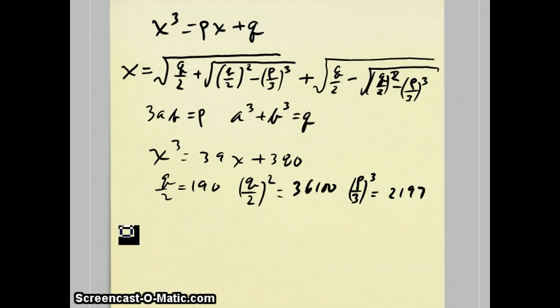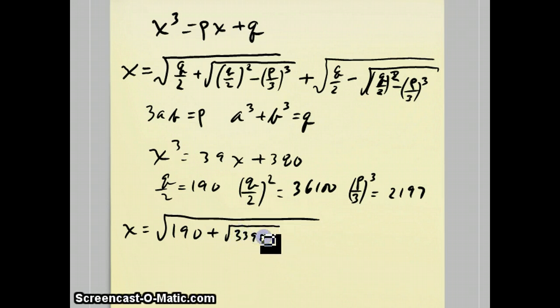So if you substitute these things into the formula, you will get 190 plus the square root. When you subtract these two things, you get the 33,903 that we've been seeing. And the other radical is the same, except for there's a minus instead of a plus.